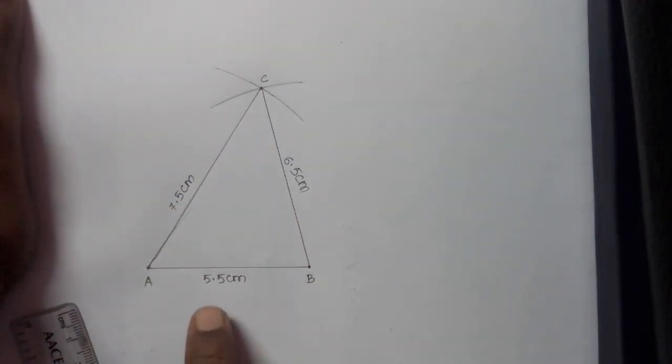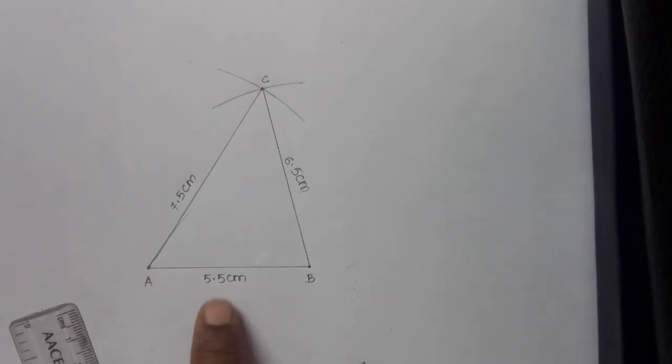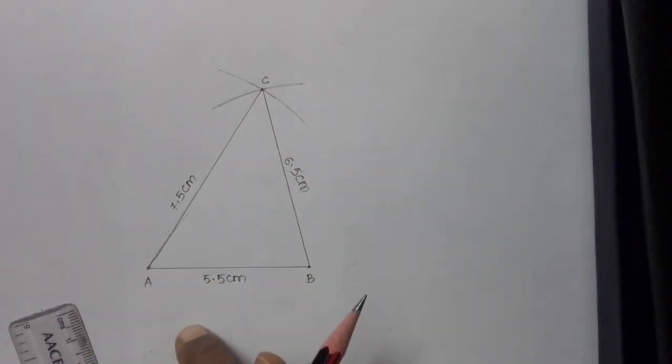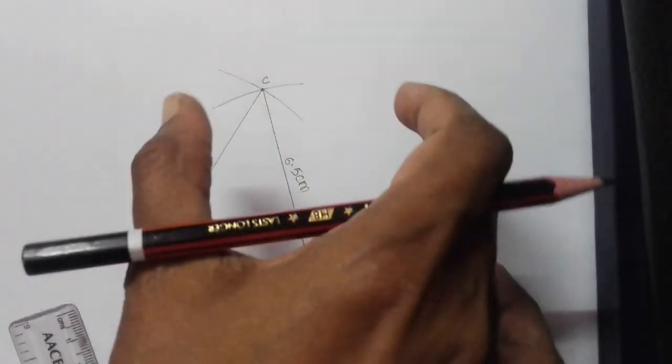So, this is the required triangle ABC. Understood this? On the board, step 4 - because the figure has come in between, the step 4 was divided into two parts. Half was written up and half was written down.